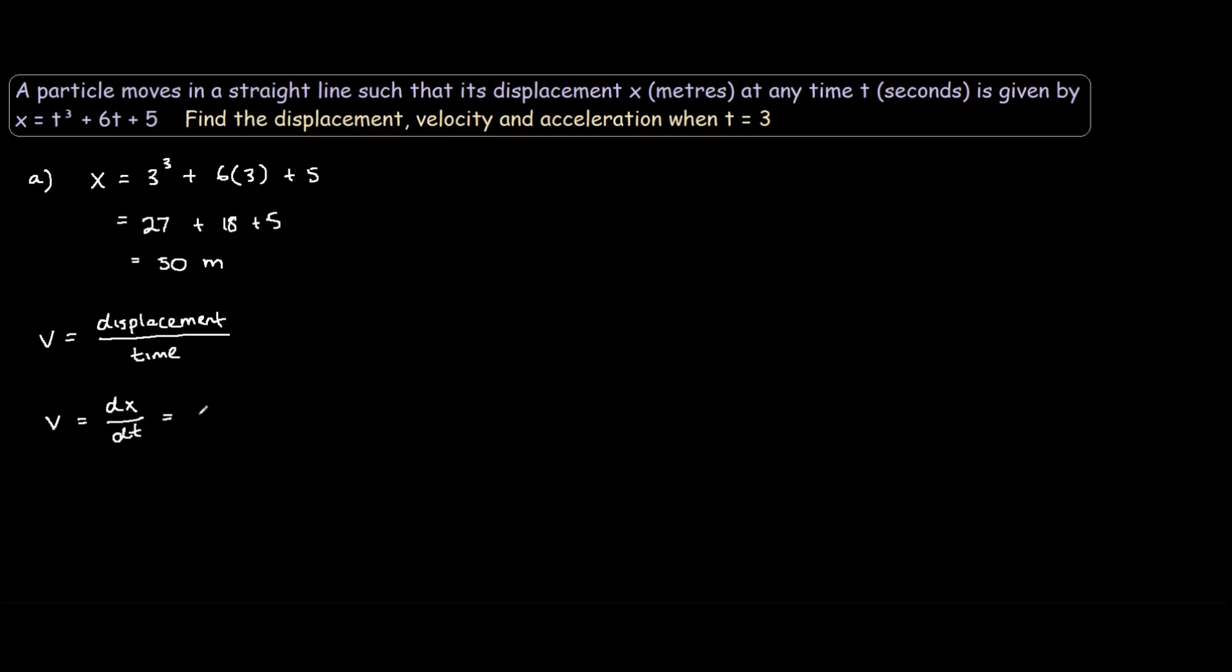So this would be 3t squared. Take the 3 in front and minus 1 to the exponent. Then plus 6.